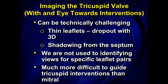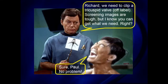When you get 3D, often there's leaflet dropout. You can get significant shadowing from the atrial septum onto the tricuspid valve, especially if it's lipomatous. And we're not really used to paying too much attention to identifying specific views for specific leaflet pairs, which is really important for these procedures. In summary, it's much more difficult to guide a tricuspid intervention than a mitral intervention, but it can be done — though there is some pain in the learning process.